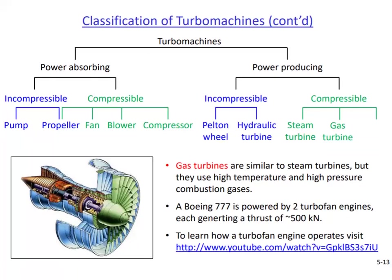The next machine is the gas turbine. Unlike a steam turbine, which uses hot steam obtained by boiling water, a gas turbine makes use of gases produced by a combustion process. Gas turbines can be used to generate electricity in natural gas power plants, and they are also used to generate thrust force in the jet engines of aircraft.